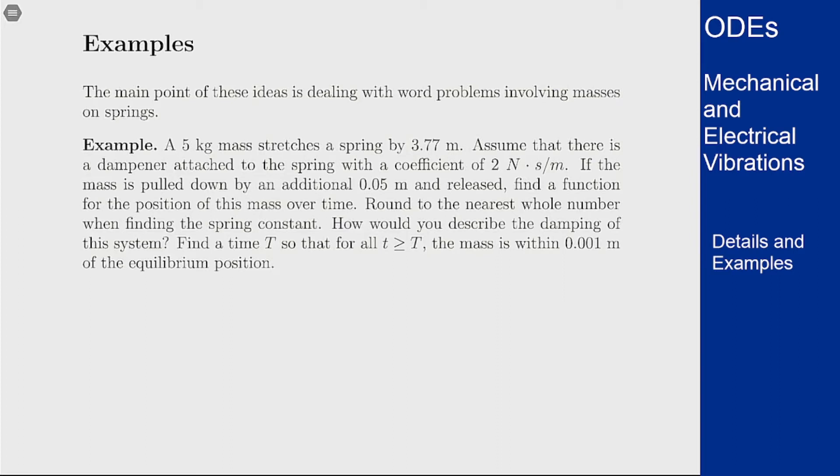Round your answer to the nearest whole number when you find the spring constant. How would you describe the damping of the system and find a time T such that for all t bigger than big T the mass is within 0.001 meters of the equilibrium position. So we first need to figure out an equation that describes this oscillation.